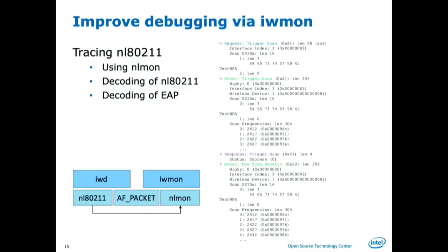One thing nobody had done before was actually seeing what's going on between the daemon and the kernel, so we built iwmon — a tracing utility that takes input from Netlink and AF_PACKET and just decodes it. You don't have to put debugging into IWD; you just take it from the kernel and see what packets are actually being exchanged. Then you can figure out where things go wrong — for example, wpa_supplicant sends a message, the kernel says 'not supported' or 'key not available,' and it keeps sending it. You can easily see where things are missing.